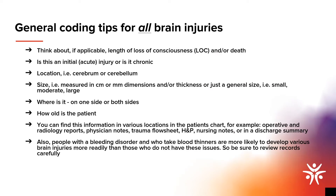Before we get into the various brain injuries, let's talk about some general information helpful in coding for all types of brain injuries. First, think about whether any loss of consciousness occurred or if the patient expired. Next, consider if this injury is new, acute, or chronic. Where is it located — in the cerebellum or the cerebrum? How small or large is it, as determined through imaging studies, operative reports, or descriptors such as tiny, small, or large? Is it unilateral or bilateral, and is there more than one on one or both sides? Finally, how old is the patient? The age of the patient can affect coding rules, so be sure to reference your coding guidelines when dealing with pediatric patients.